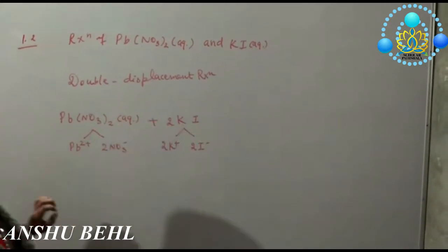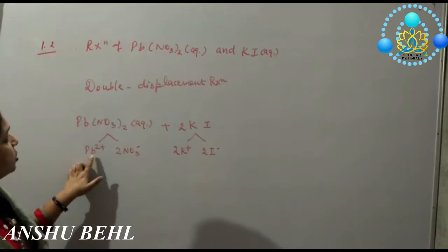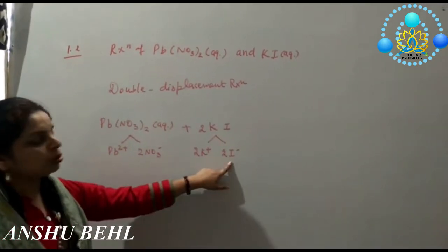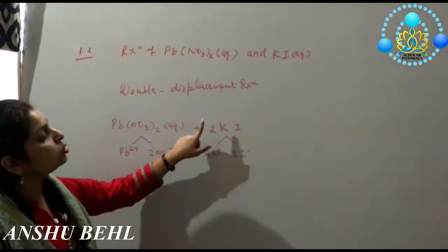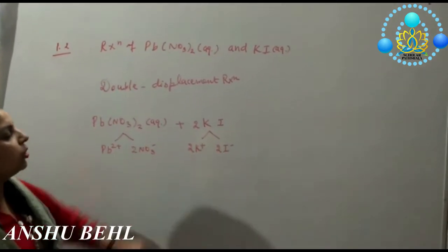Why two potassium iodide? As you are having here a cation with two unit positive charge, to satisfy this you need two units of negative charge also. So we have taken here two potassium iodide which will yield two unit negative charge.